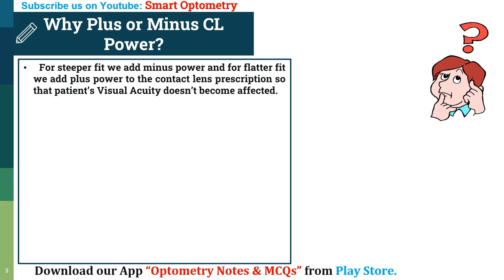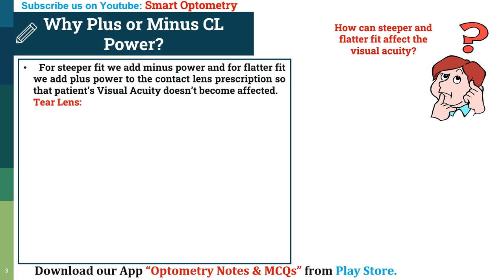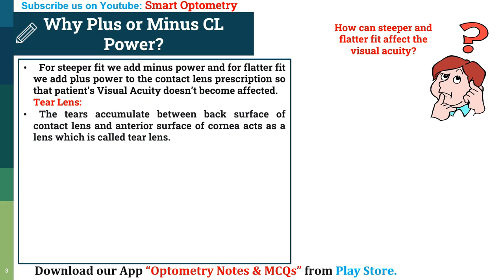Now you might be thinking: how can steeper and flatter fit affect the visual acuity? To understand this, first you need to know what a tear lens is. The tears that accumulate between the back surface of the contact lens and the anterior surface of the cornea is called the tear lens.